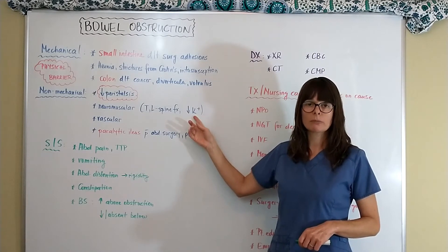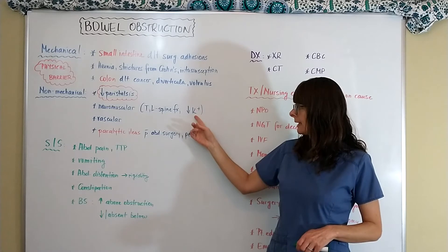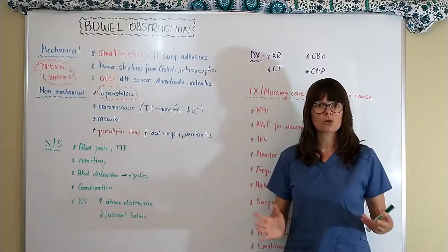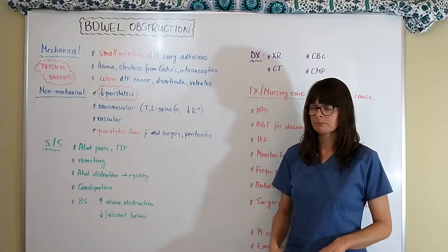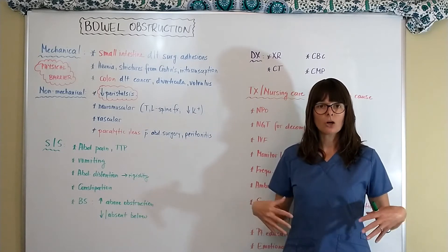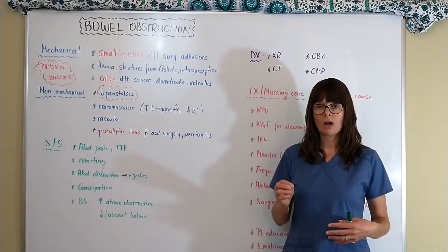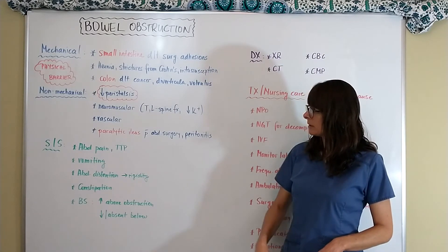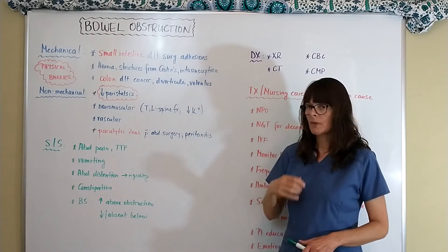Electrolyte imbalances also matter — potassium has a lot to do with muscle contraction. We usually think about the heart when we think about potassium, but hypokalemia can also cause non-mechanical bowel obstruction: without enough potassium, the intestine becomes very sluggish. Vascular causes include atherosclerosis in the arteries supplying the digestive system — a clot causes no blood flow, leading to ischemia. The most common non-mechanical causes overall are paralytic ileus and adhesions.